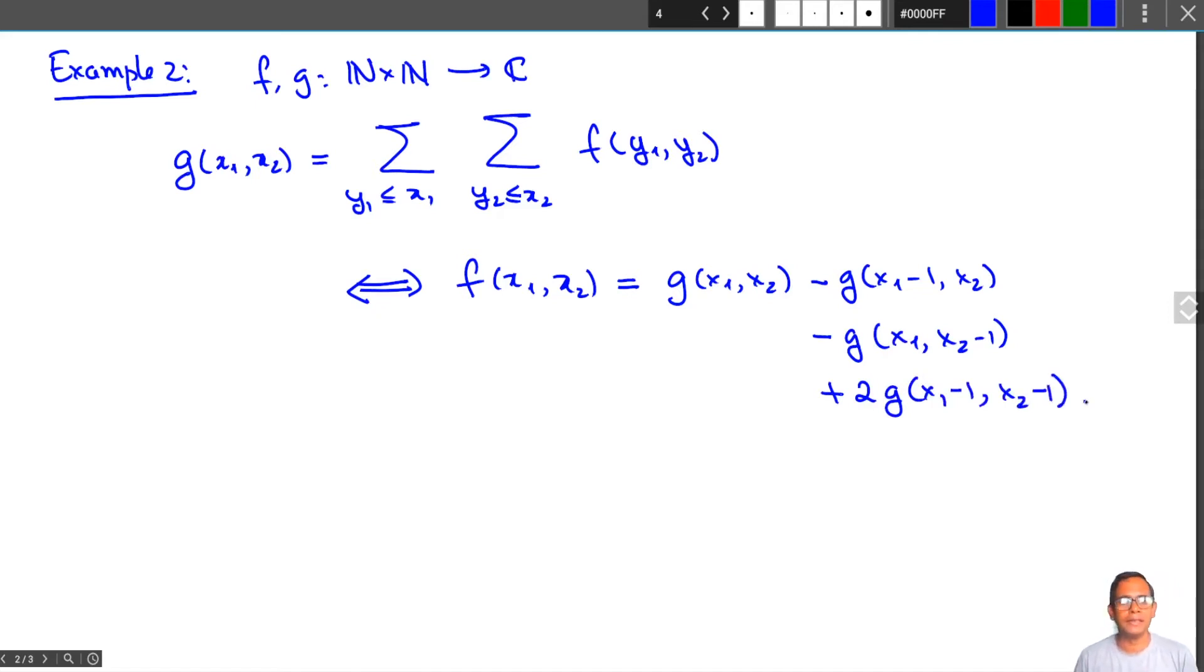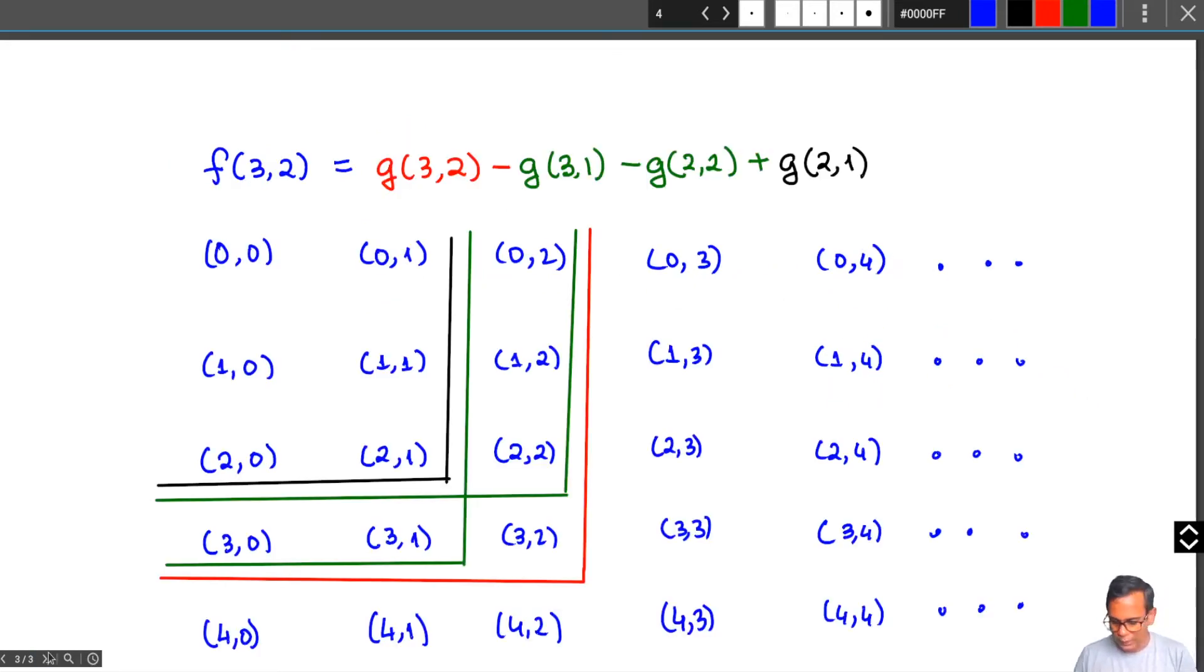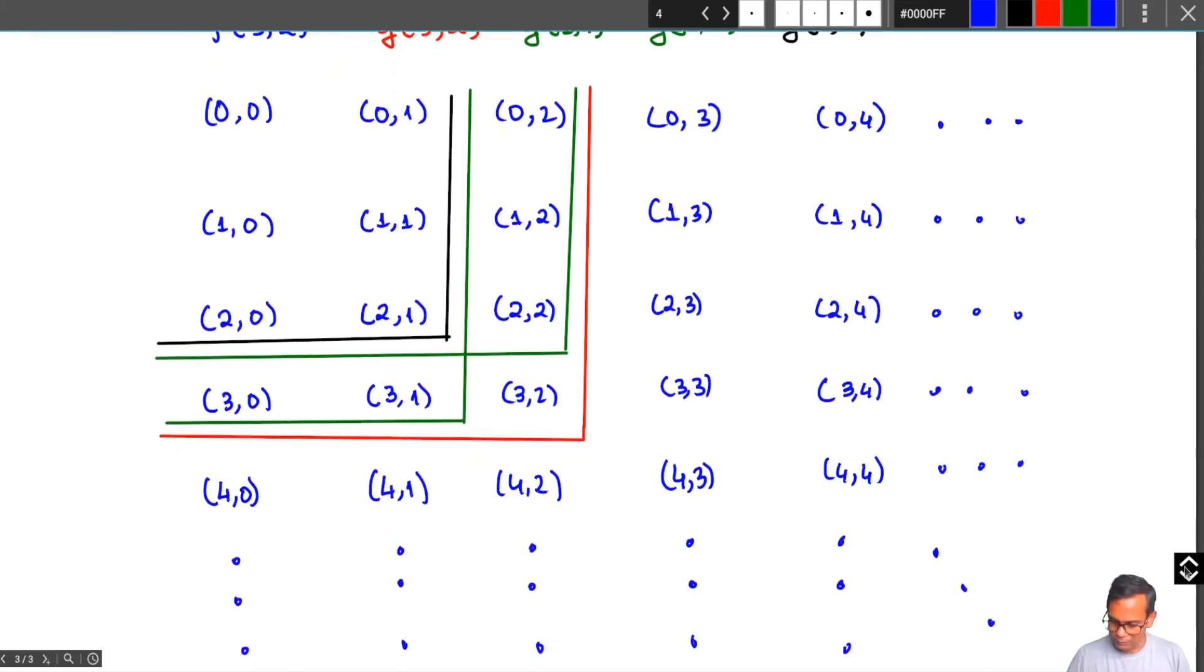I'll let you think about the details of the proof but basically you can visualize this as follows. Here I'm showing you why f(3, 2) = g(3, 2) - g(3, 1) - g(2, 2) + g(2, 1). I've drawn the lattice N × N pairs, ordered pairs of non-negative integers, as a two-dimensional array of numbers.